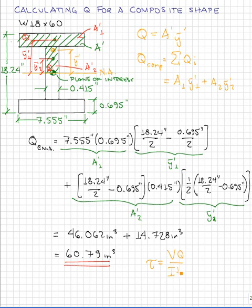Note that the thickness term in the denominator of the shear stress equation will be the width of your plane of interest. So for this case, where we're looking at the neutral axis, the width of the web will be the thickness value used in our shear stress equation.